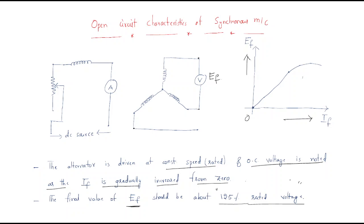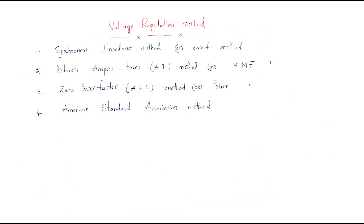This covers the open circuit and short circuit characteristics of the synchronous machine. Open circuit characteristics relate the open circuit voltage and field current. Next, we discuss voltage regulation methods. There are different methods to calculate voltage regulation. The first method is the synchronous impedance method, also called the EMF method or Zs method.